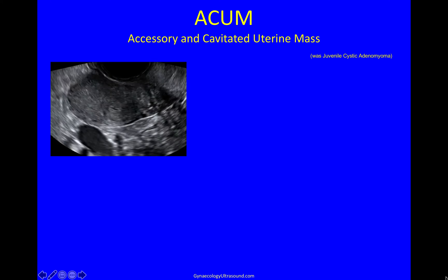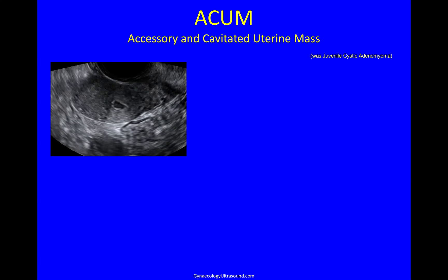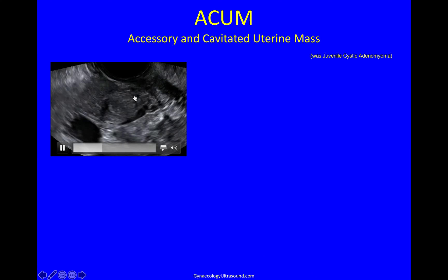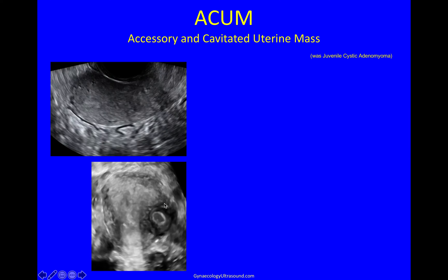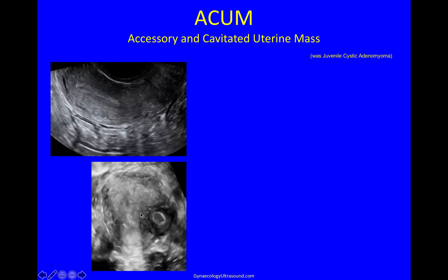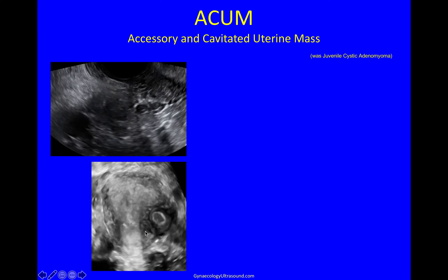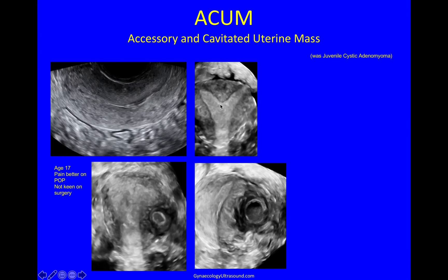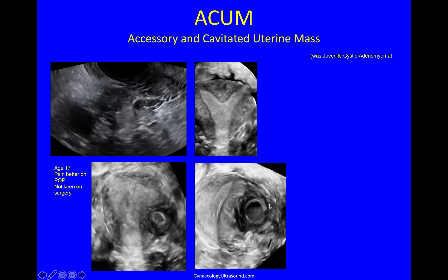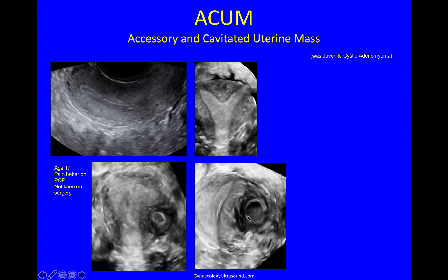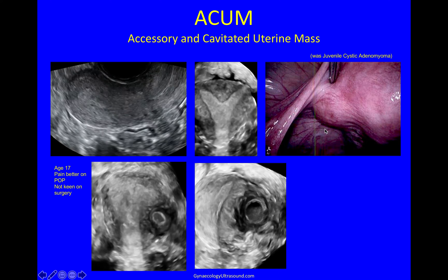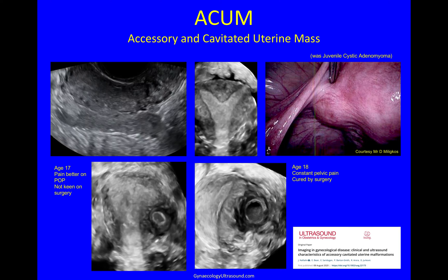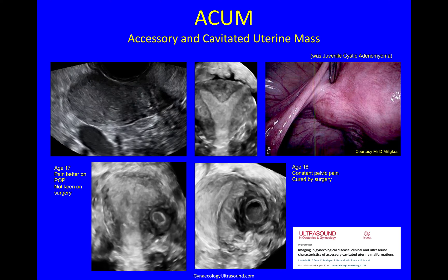This takes us to a new entity called accessory and cavitated uterine mass (ACUM), previously called juvenile cystic adenomyoma. This 17-year-old girl presented with intense dysmenorrhea. On 2D there is a small mass to one side of the uterus, and on 3D — slightly behind the best plane for the endometrial cavity — you can see this little mass. She was managed on the mini pill. An 18-year-old with a slightly arcuate uterus had a similar cystic mass in the myometrium with internal hemorrhage; she opted for surgery, the mass was removed, and her pain was cured. A newly published paper provides further detail on AcOMs.